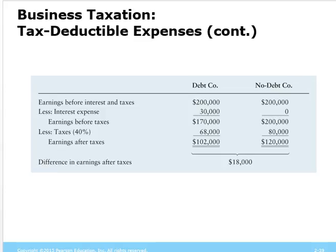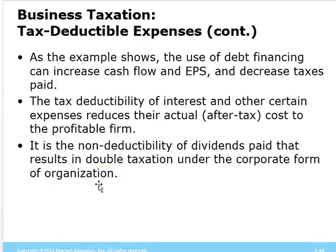Allowing the deduction of mortgage interest makes housing more affordable — that's one reason the government allows it. Companies have the same advantage for any type of interest. The cash flow of a company is increased because using debt to reduce taxes helps increase cash flow.